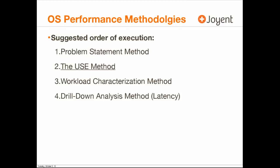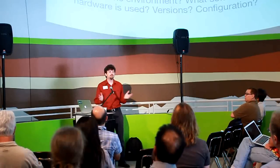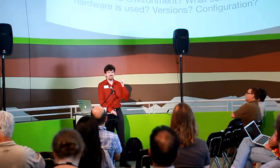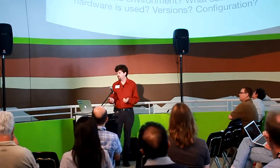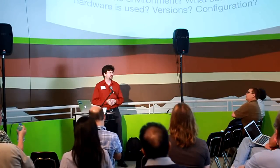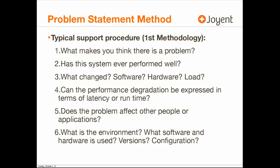I've got four different operating system performance methodologies in the slide deck. I'm summarizing three of them and will go through the USE method. The first one, the problem statement method — it's important to include this first because it does solve a lot of problems. When you first get that performance ticket, you ask the customer: what makes you think there is a problem? Has the system ever worked? What changed — software, hardware, load? Did you just suddenly add a bunch of new users to the system? Can the performance degradation be expressed in terms of latency or runtime? Does the problem affect other people or applications, and what is the environment — what software or hardware versions are used?